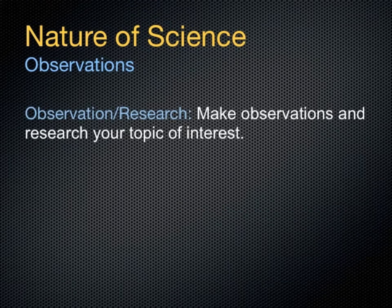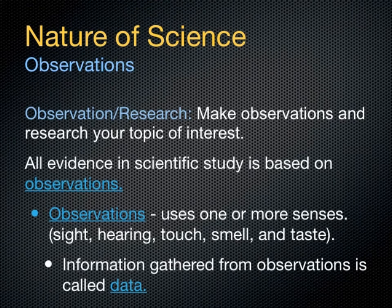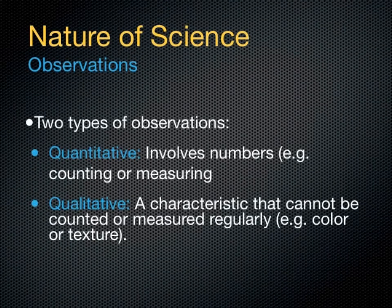Let's move on and talk about observations. We make observations in the scientific community. Observations help us collect data. We use our five senses — sight, hearing, touch, smell, and taste — which all provide data and information we use in science. We have two different kinds of observations. The first is quantitative observation, which involves numbers. Anytime you are counting or measuring — like 15 feet or five blue marbles — that is a quantitative observation.